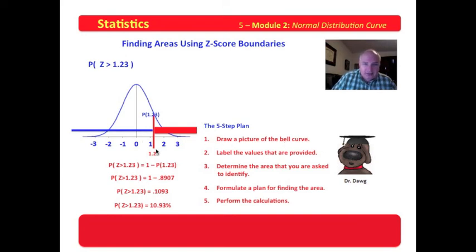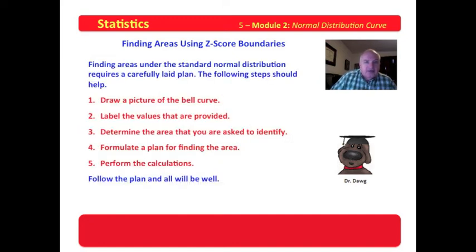Look at the plan: draw the picture, label the values, and if those values are not Z-scores, convert them to Z-scores. Determine the area that you're asked to identify. Formulate a plan for finding that area based on the information the tables give you. Read the tables, plug it in, perform the calculations, and you're off to the races. Draw a picture of the bell curve, label the values that are provided, determine the area that you're asked to identify, formulate a plan for finding the area, perform the calculations, and follow that plan — all will be well. If your curve is not a standard normal distribution and you just have a regular distribution, label those values in the picture, convert them to Z-scores, and then you're off to the races.